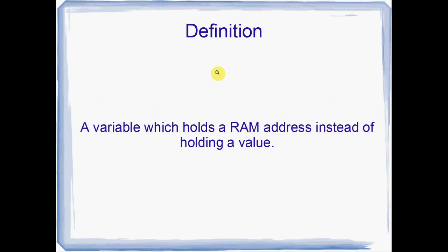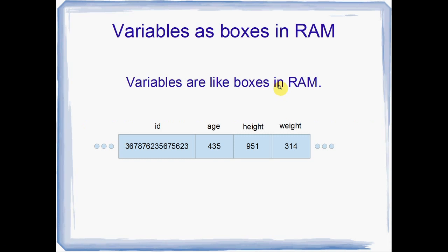A pointer basically is just a variable that holds a RAM address instead of holding a value. It doesn't hold a value, it holds an address. Let's have a look at what that means.